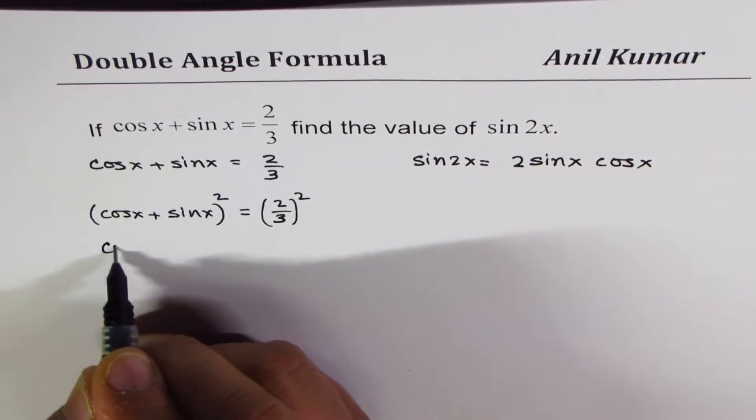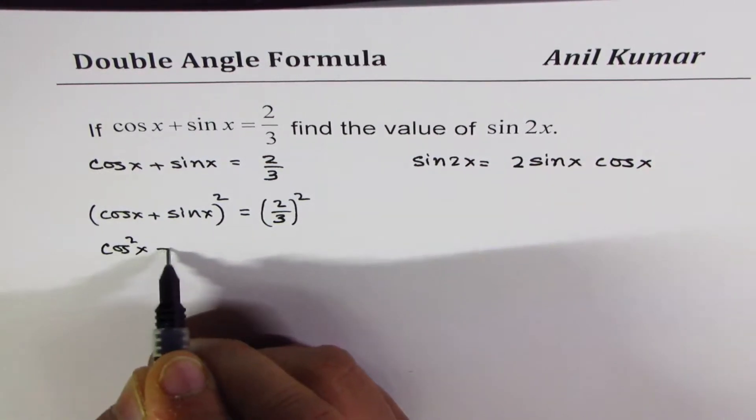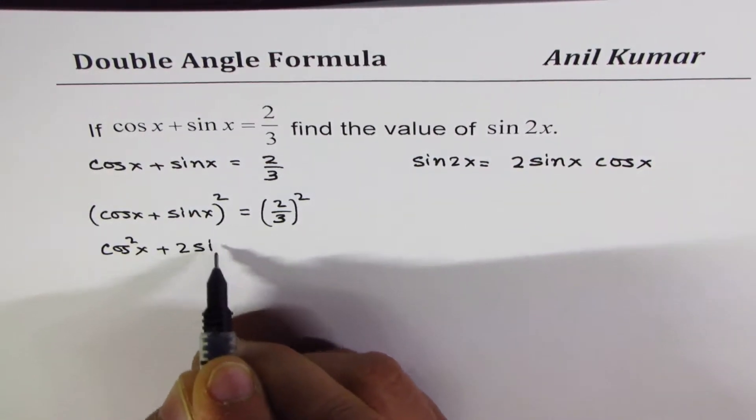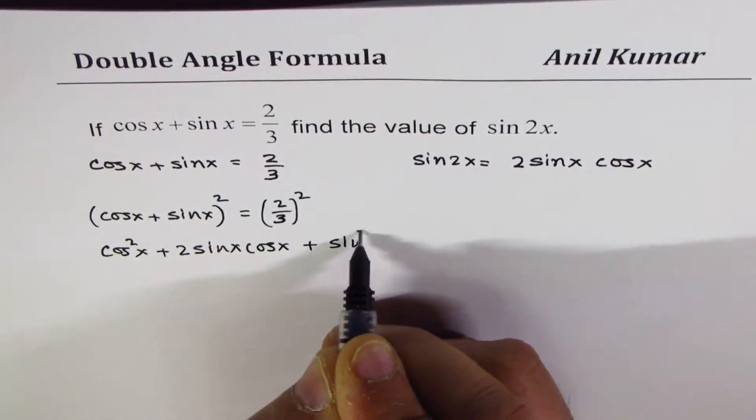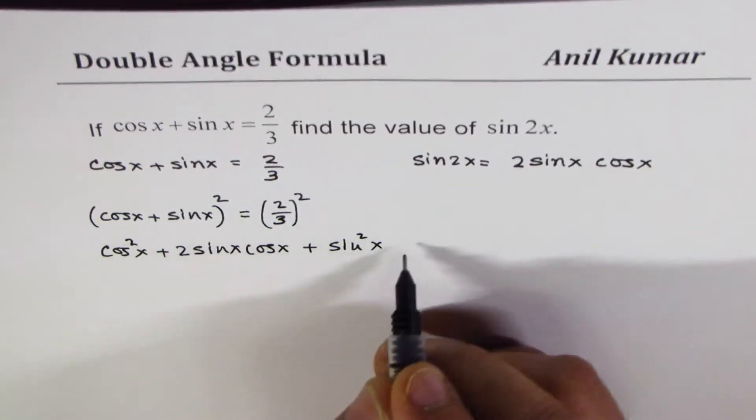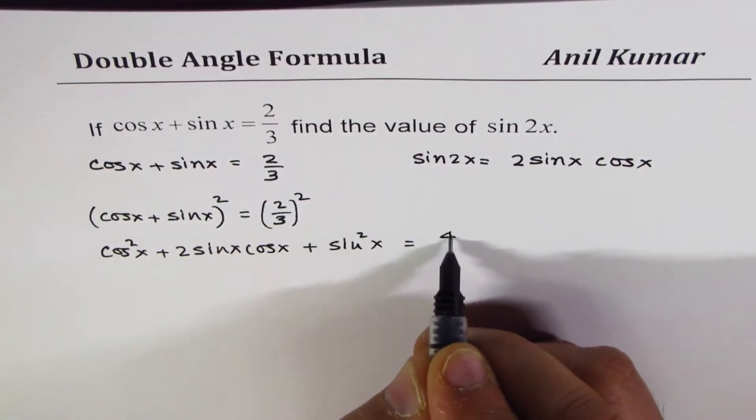Now, square of this is cos square x plus 2 sin x cos x plus sin square x on the left side, and on the right side we get 4 over 9, right?